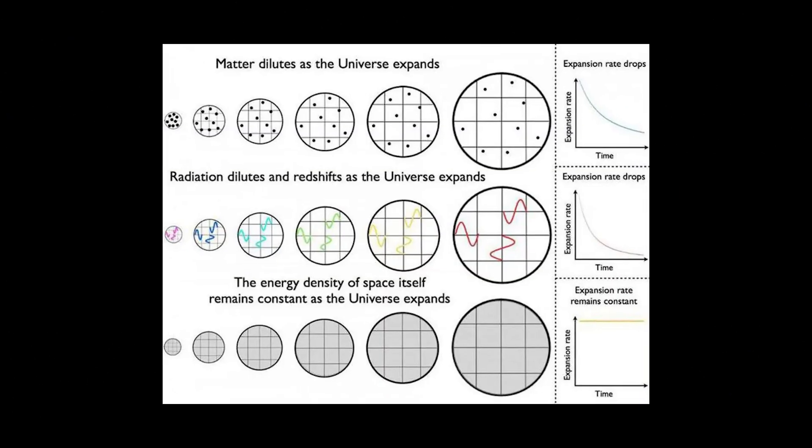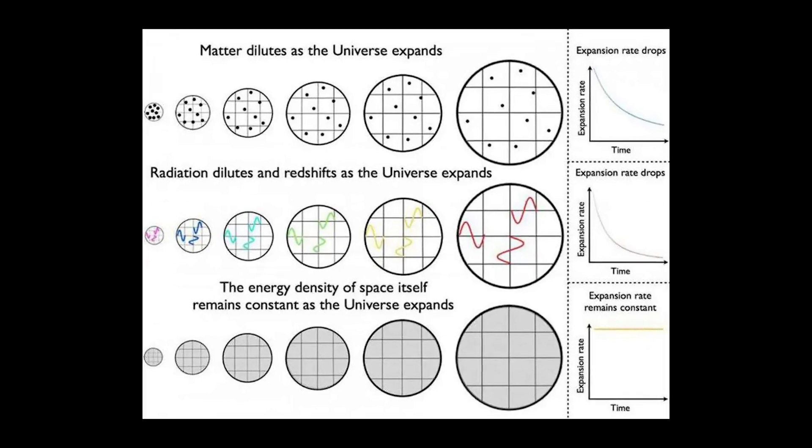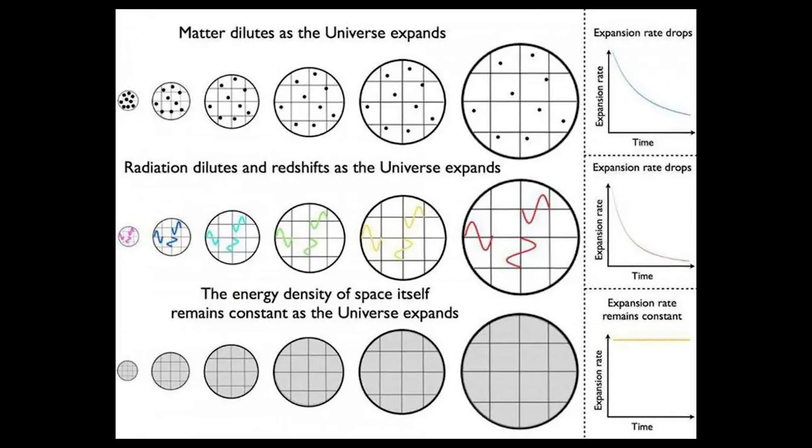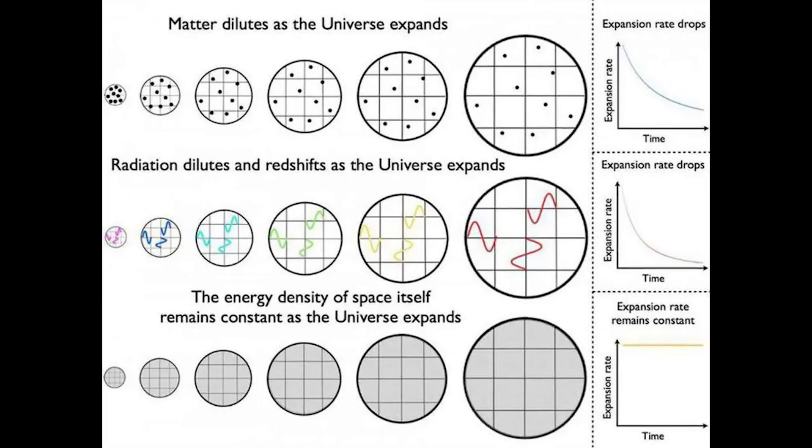While normal and dark matter and radiation become less dense as the universe expands due to its increasing size, dark energy and the field energy during inflation are forms of energy intrinsic to space. As the expanding universe creates new space, the density of dark energy remains constant. Note that the individual quanta of radiation are not destroyed, but rather dilute, and redshift to progressively lower energies as space expands, elongating to longer wavelengths and lower energies.